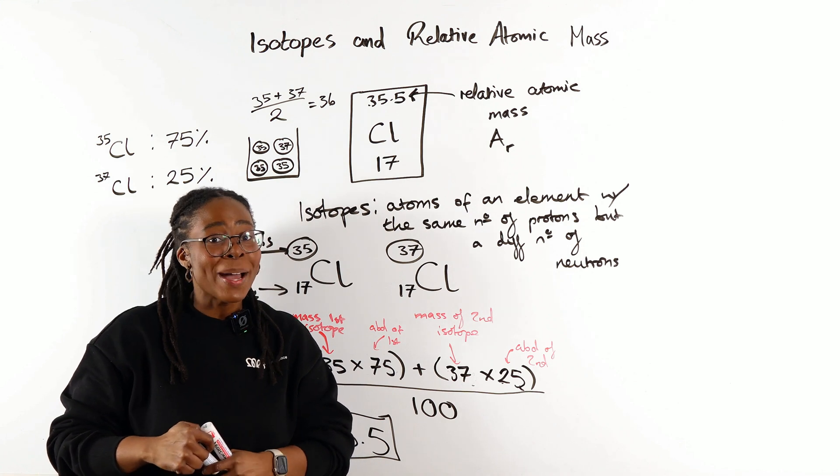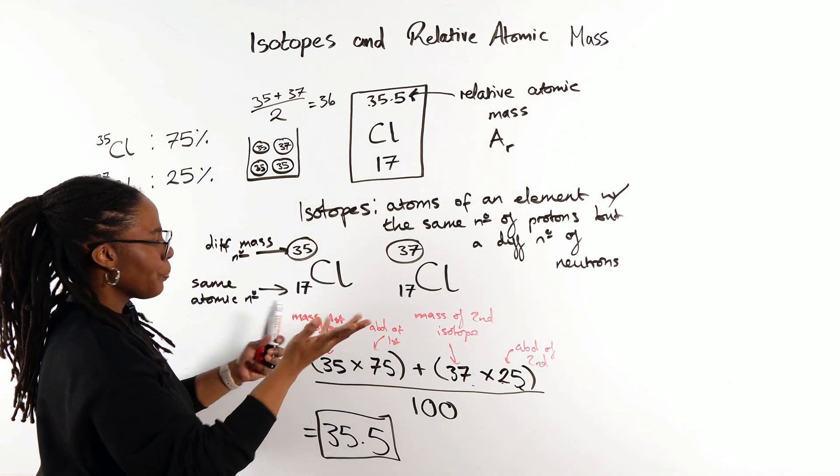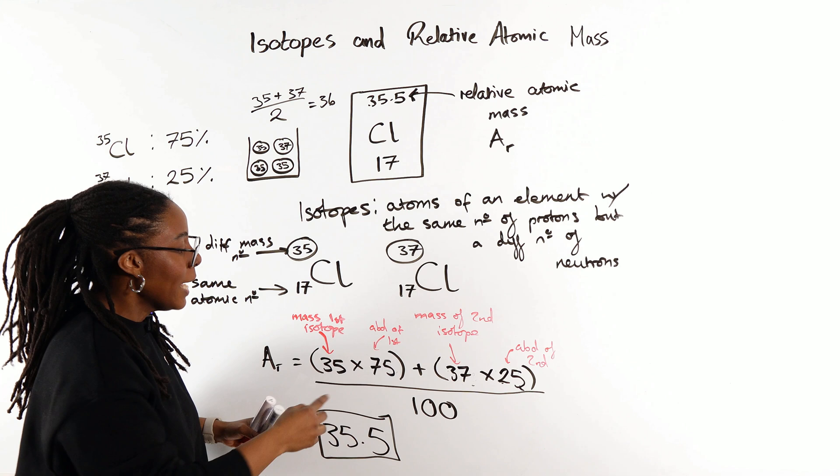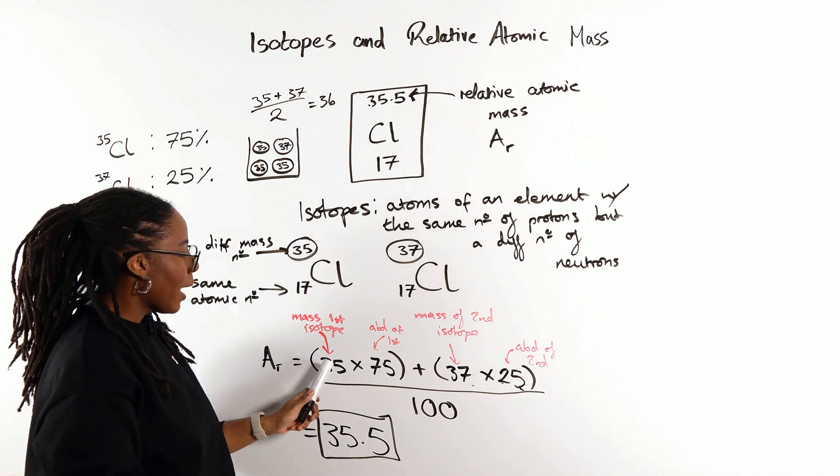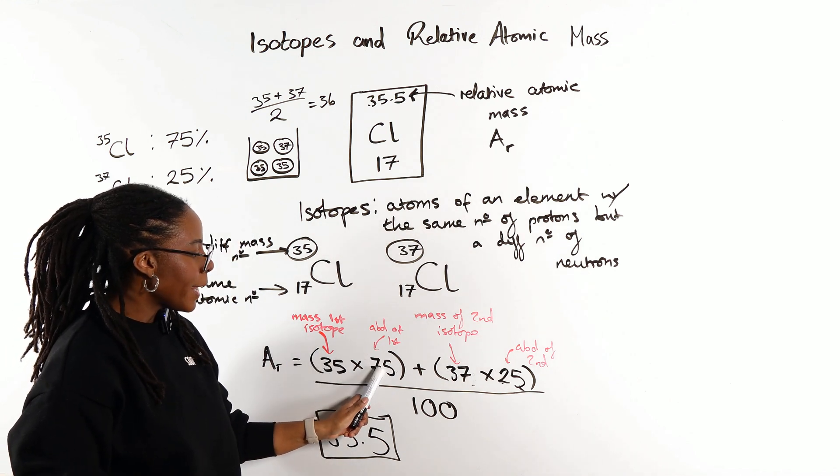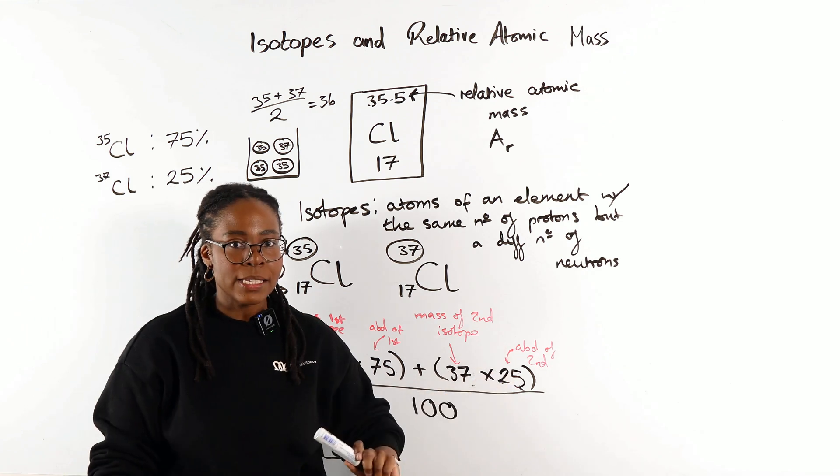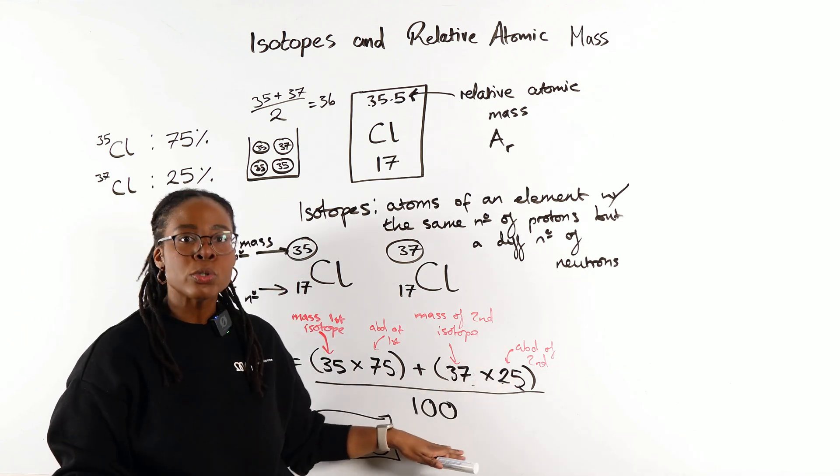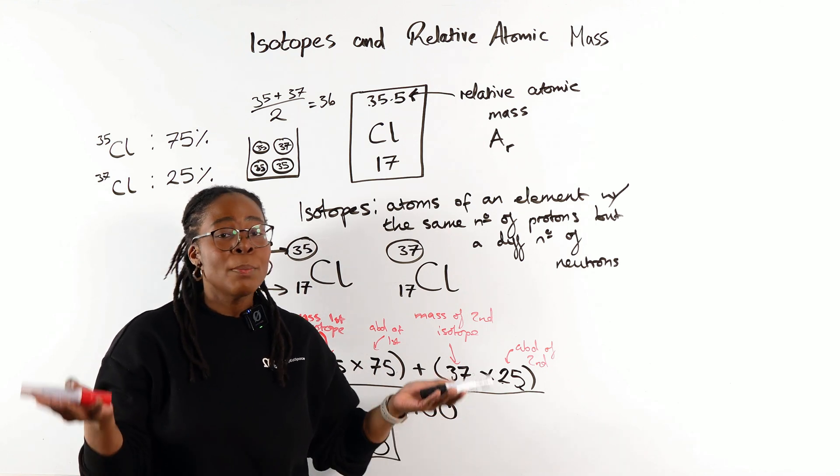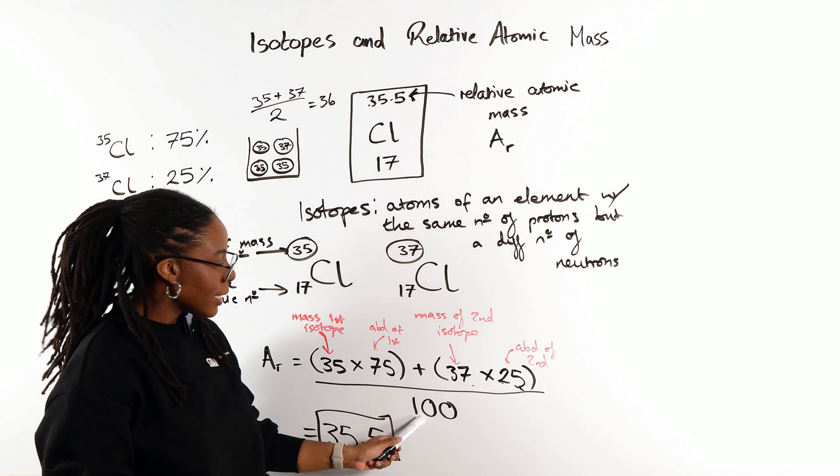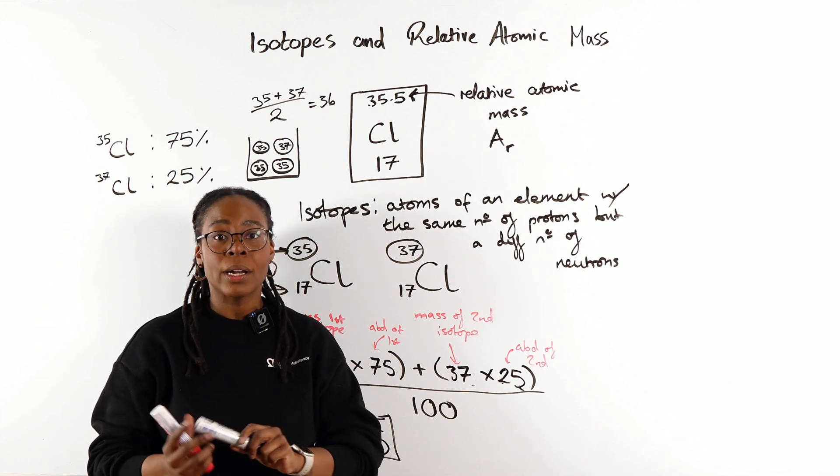It does not matter which element we're looking at. And it also doesn't matter how many isotopes we have, we still calculate it in the same way. We take our masses, we multiply by their abundances, and we keep adding their terms, divided by the total abundance of all of those isotopes. And at GCSE, because we're dealing with percentages, that's going to be divided by 100.